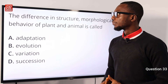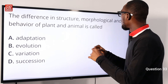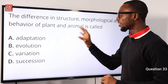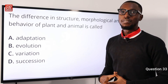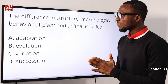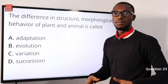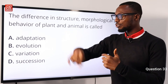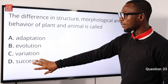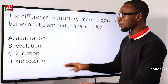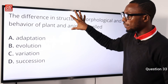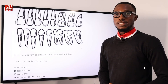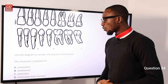Question 33: The difference in structure, morphology, and behavior of plants and animals is called what? The key word is difference — and difference refers to variation. Adaptation is the adjustment made for survival. Evolution talks about change over time. Succession refers to ecological succession. The correct option is variation — option C is correct.